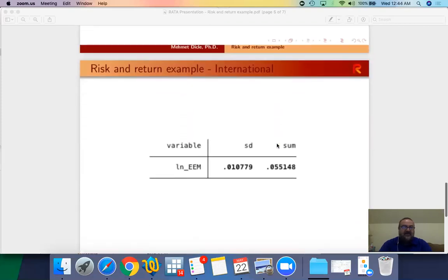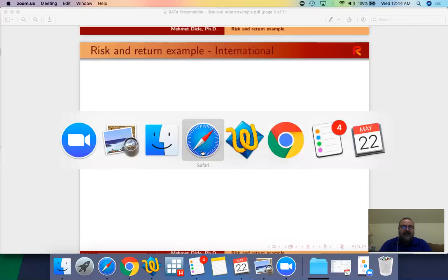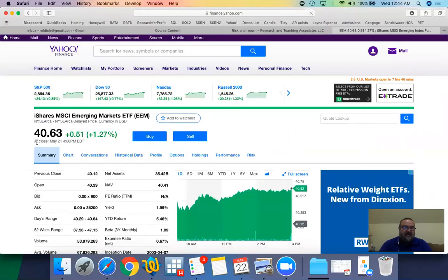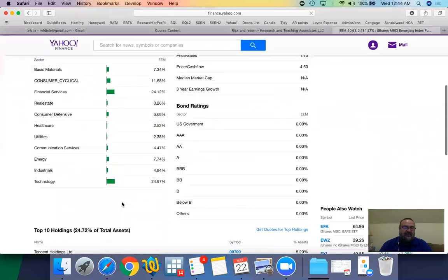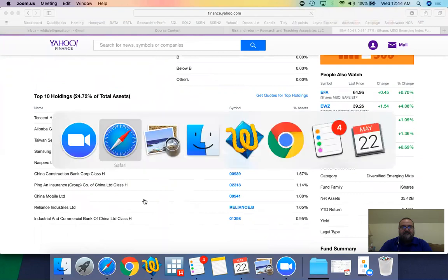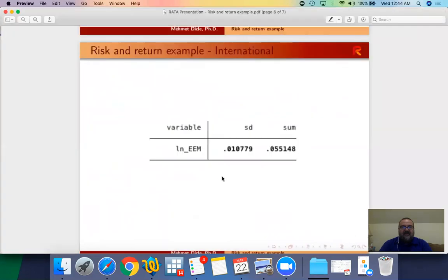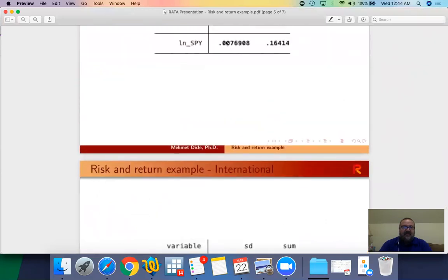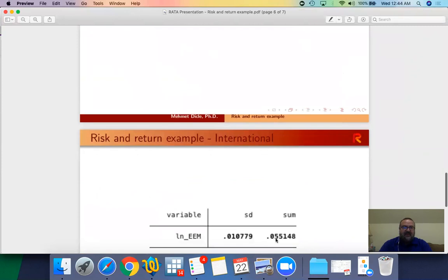Now if you look at the international comparison, this is EEM. EEM is iShares MSCI Emerging Markets ETF. This is considered to be a relatively higher risk emerging markets equity ETF. If you look at the holdings, you'll find companies from China, Korea, and so on. Based on that, the standard deviation of EEM is higher than S&P 500, but the return is significantly lower.